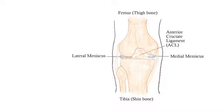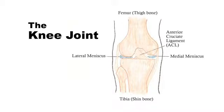This injury occurs from a deceleration or a land from a jump with the knee twisting. The athlete commonly will hear a pop and afterwards a sense of instability.